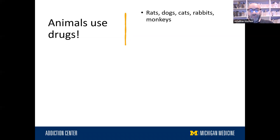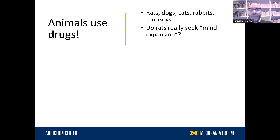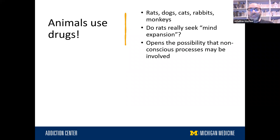Animals are very interested in using drugs; they'll use them to excess, even up to the point that it kills them. They'll just choose to use drugs in the same way that humans do. But that raises a question about some of the explanations people give for their drug use — is that really what's driving it? Some of these reasons don't make sense when you apply them to an animal. It at least raises the possibility that some non-conscious process might be involved in drug use.